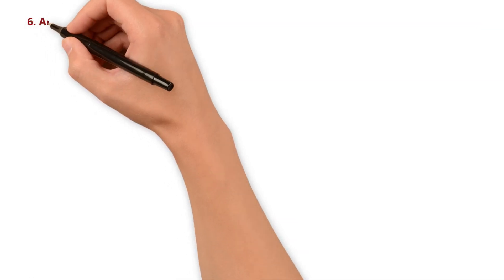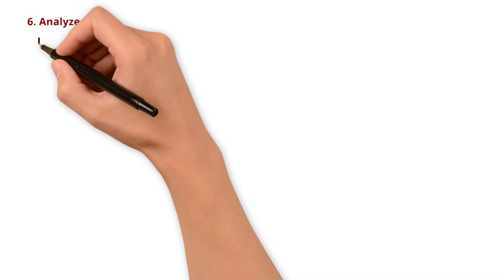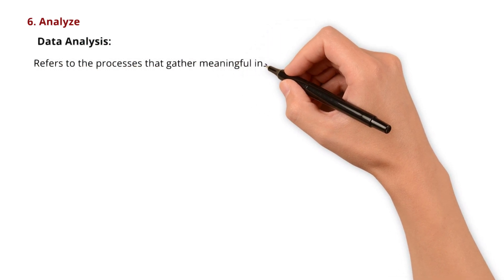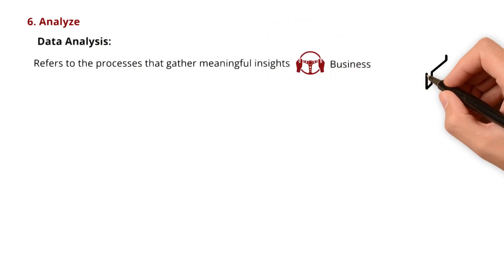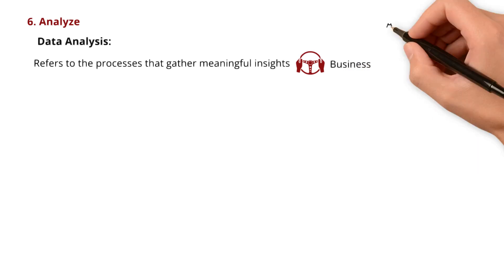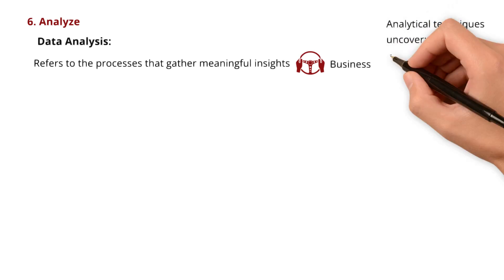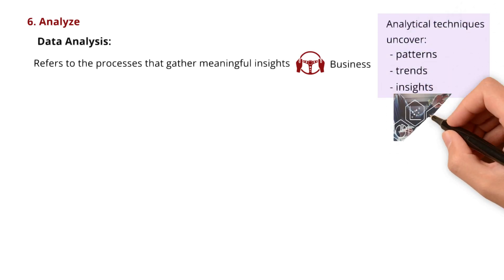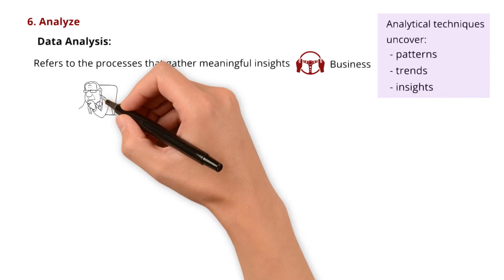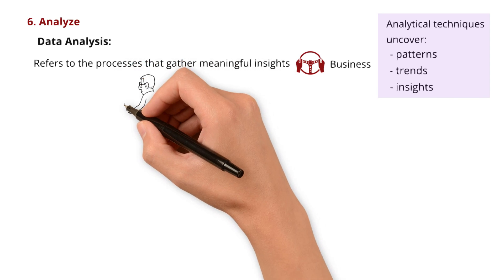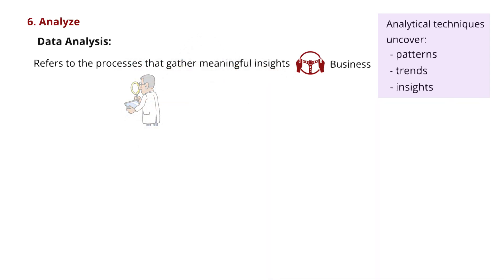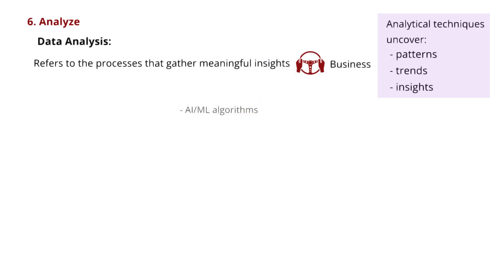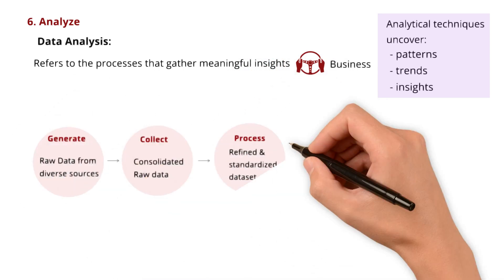Moving forward, we reach the analyze stage. What does data analysis refer to? It refers to the processes that try to gather meaningful insights that drive business. Here, data is put to work. How is that done? Using various analytical techniques, we uncover patterns, trends, and insights that drive informed decision making. The analysis phase is where the true value of data starts to emerge. Analysts and data scientists use different tools and strategies to conduct this analysis. Some of the more commonly used methods include statistical modeling and AI/ML algorithms for data mining. They craft the narrative that guides our journey.